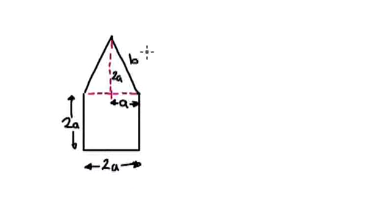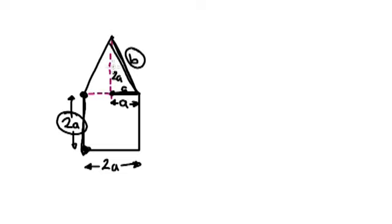Let's say you're given this shape here. The distance from here to here is A, and the distance from here to here is twice the length of A — that's why it's 2A. The diagonal line here is B, so this length must also be B. And the height of this here is twice the length of this length here, so it's 2A.